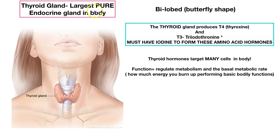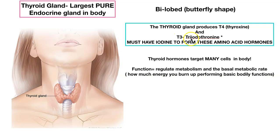The thyroid gland is the largest pure endocrine gland in the body. It is bilobed — it has two lobes and a butterfly shape. It sits just inferior to the thyroid cartilage, which is named because it's right next to the thyroid gland. The thyroid gland produces two hormones: T4, called thyroxin, and T3, triiodothyronine. These are protein hormones that contain iodine, so we need iodine to form these amino acid hormones.